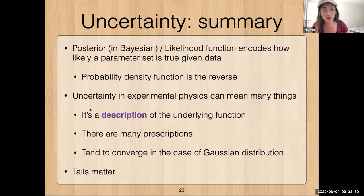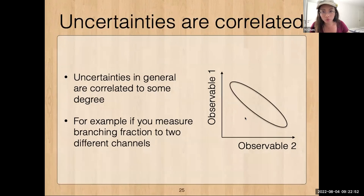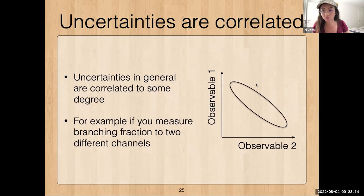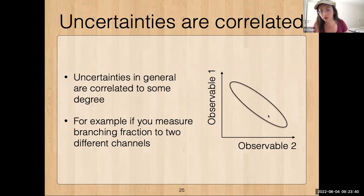Let me move on to the next part: correlations, because that's one important thing about uncertainties that we need to take care of. One important thing to interpret results is to recall that uncertainties are in general correlated to some degree. For example, if you're measuring the branching fraction of some particle to two different channels, there will be correlation because if one goes up the other has to go down — they all add to one. If we plot observable one versus two, we'll see this anti-correlated shape.